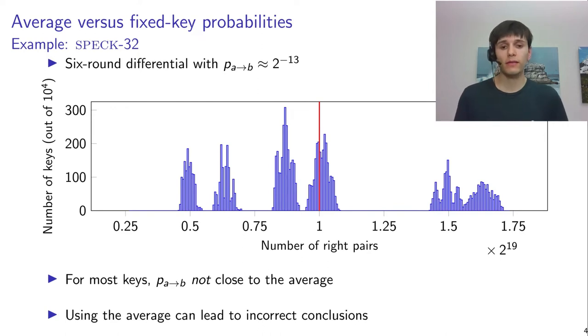And then what we would expect is that most of the keys would have a probability that is close to this red line, but as you can see that's not really the case. So the probability for most keys is not close to the average, and there's a lot of things going on here, you can see different peaks. But the main takeaway here is that if you would use the average to compute things like the data complexity here, that would give us incorrect results.